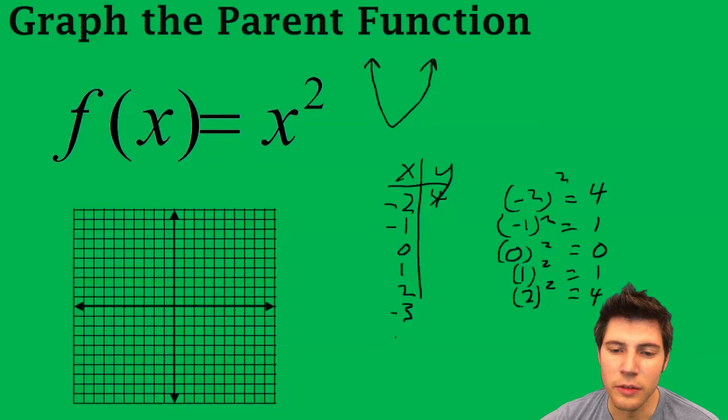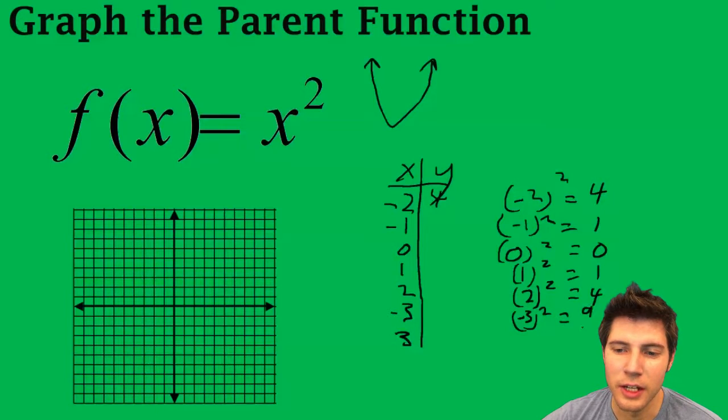And we can also do negative 3 and 3. And if we plug negative 3 in, negative 3 squared is negative 3 times negative 3 is 9. And 3 squared is 9.